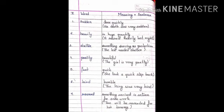The third word is shelter. Shelter means protection, something serving as a protection. The sentence is the kid needed shelter. The fourth word is pretty. You all know pretty means beautiful. The girl is very pretty. Fast means quick. The sentence is she took a quick step back.